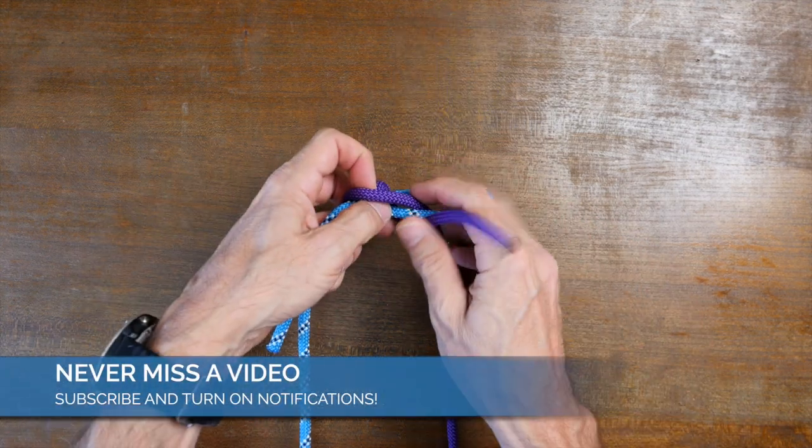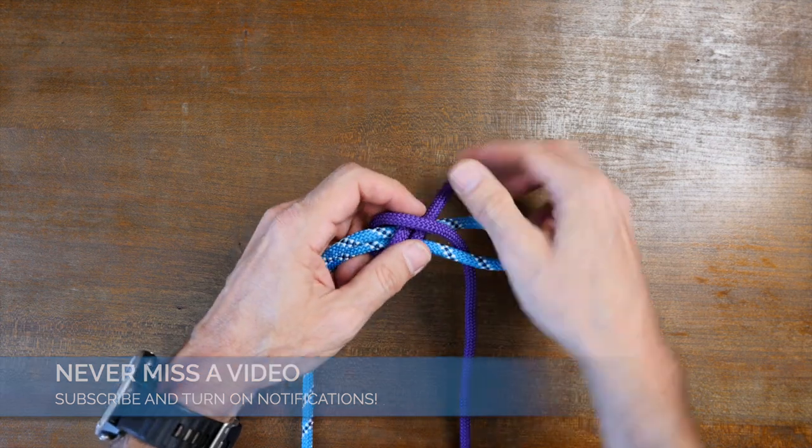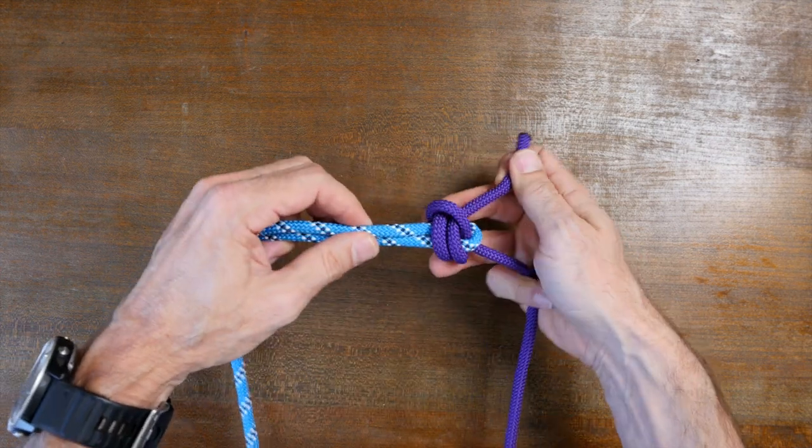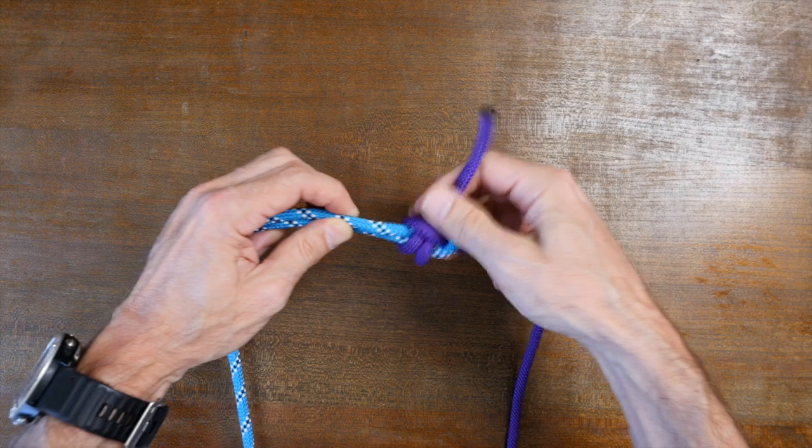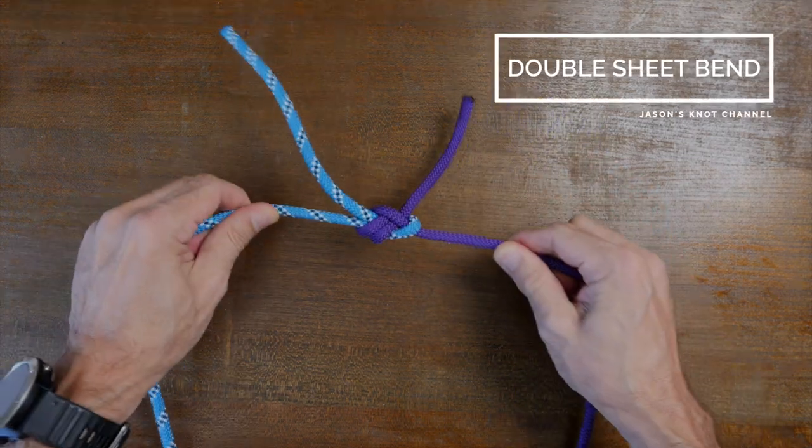The sheet bend also has an advantage that it can be made even stronger by doubling the wrap with the second rope, as shown here, and in this case, making what's called the double sheet bend.